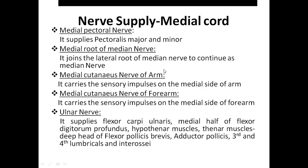The branches of the medial cord consist of: medial pectoral nerve, medial root of medial nerve, medial cutaneous nerve of arm, medial cutaneous nerve of forearm and the ulnar nerve.